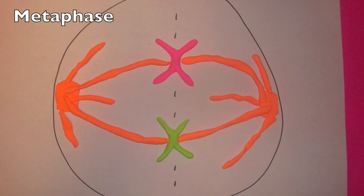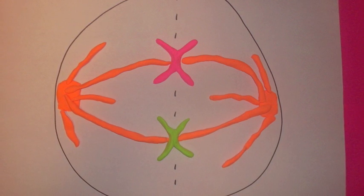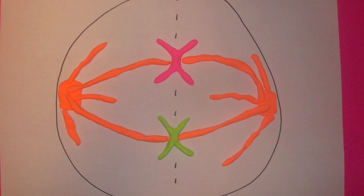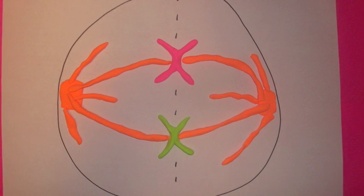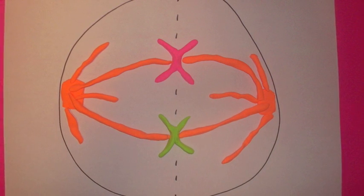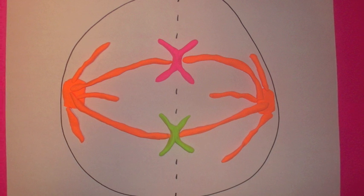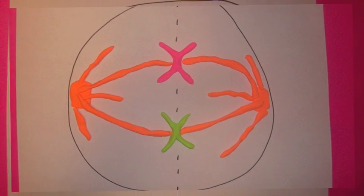Metaphase comes next in mitosis. Here, the chromosomes congregate at a plane in the middle of the cell called the equatorial plane. The ends of the spindle fibers are the poles to which the chromatids will migrate. The chromatids are attached to the spindle fibers at the centromeres.